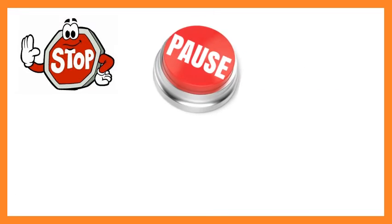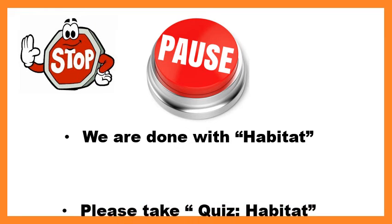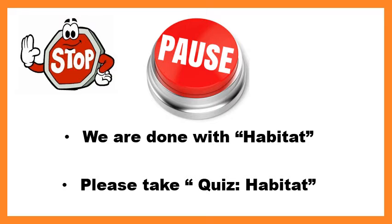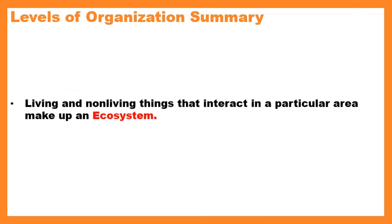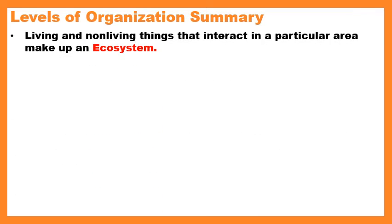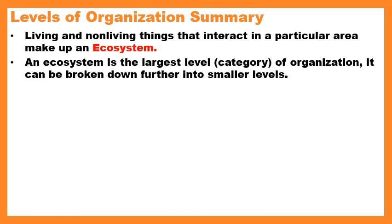Please pause the video — we're finished with 'Habitat,' and I'd like you to take the quiz for that chapter now. Go back, rewatch that section before you take the quiz. Moving on to our next chapter: Levels of Organization. Living and non-living things — biotic and abiotic things — that interact in a particular area make up an ecosystem. Think back to the zebra picture: the living zebra and plants plus the non-living water, air, and mountain together form an ecosystem. An ecosystem is the largest level of organization and can be broken down into smaller levels.